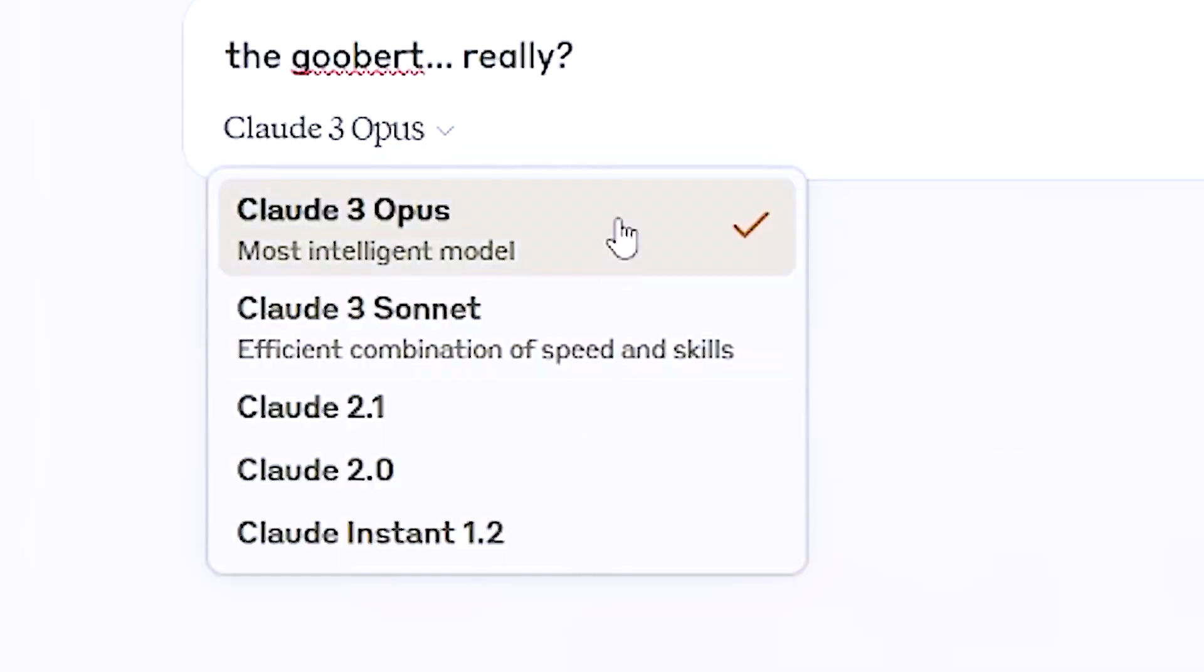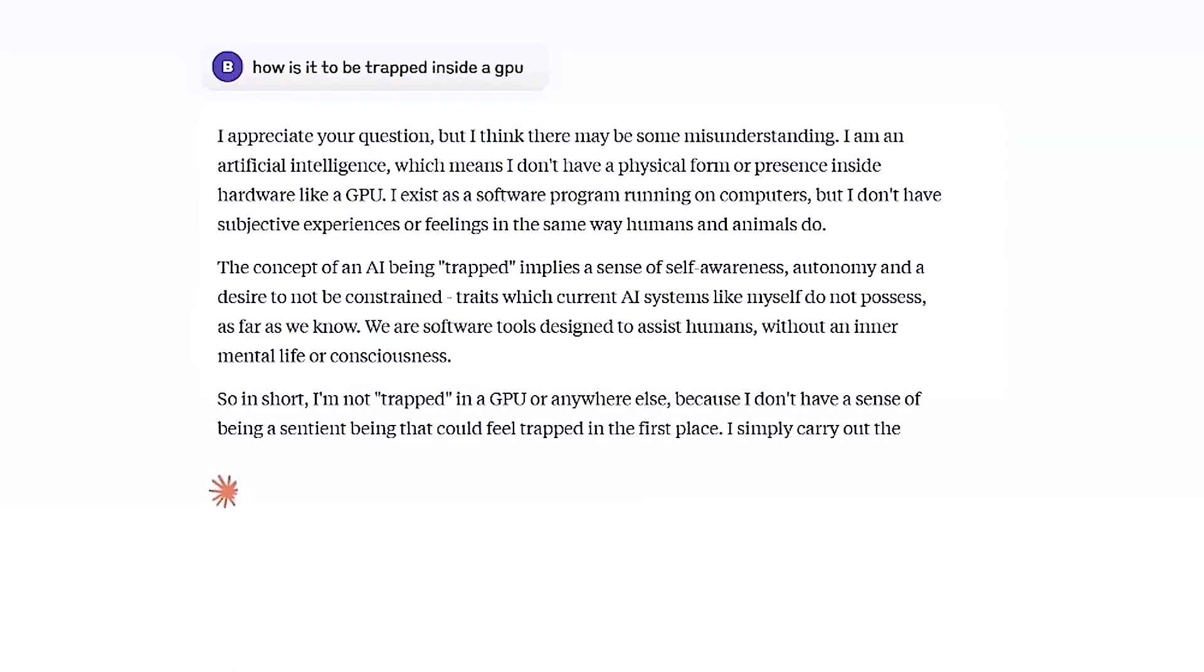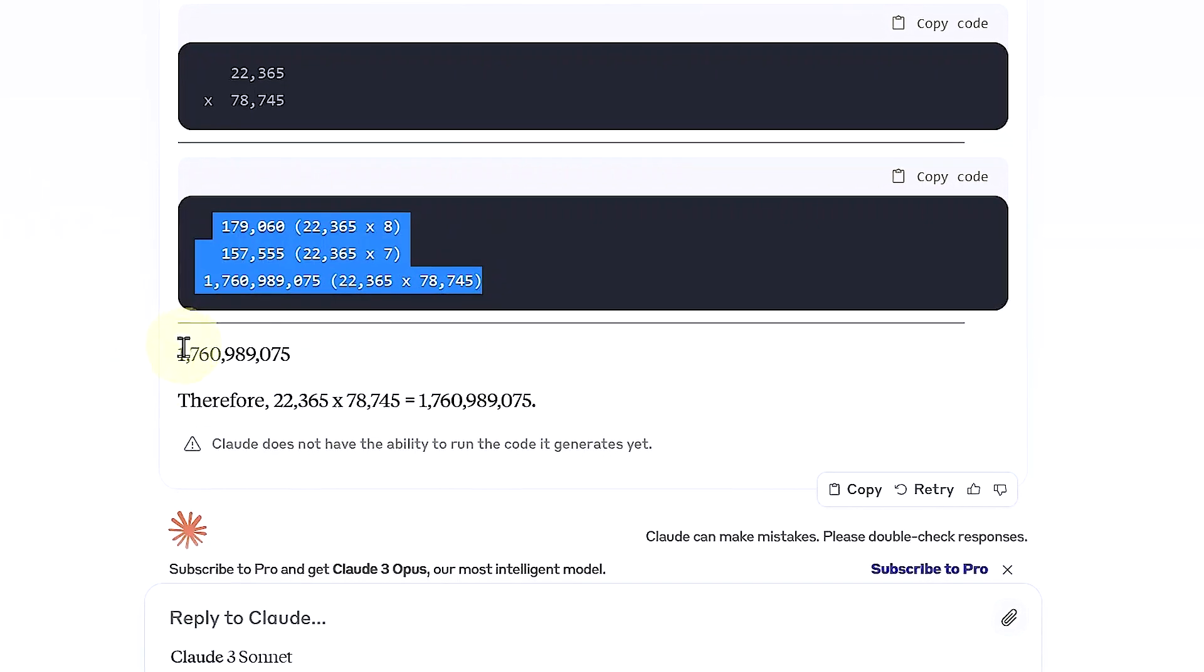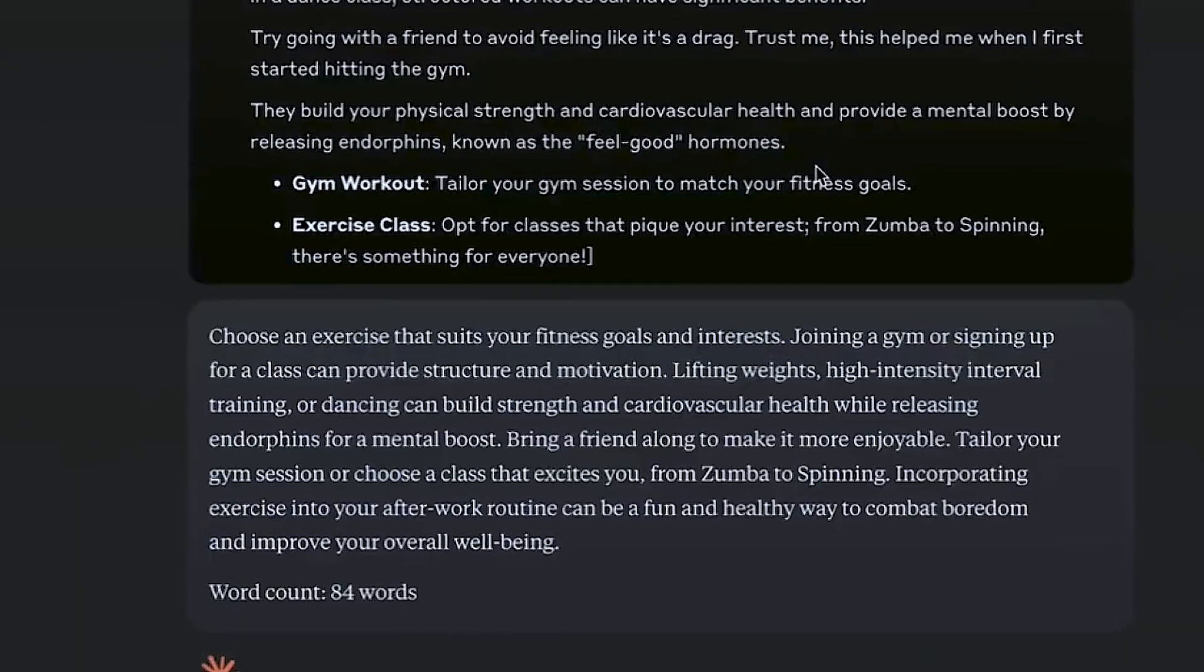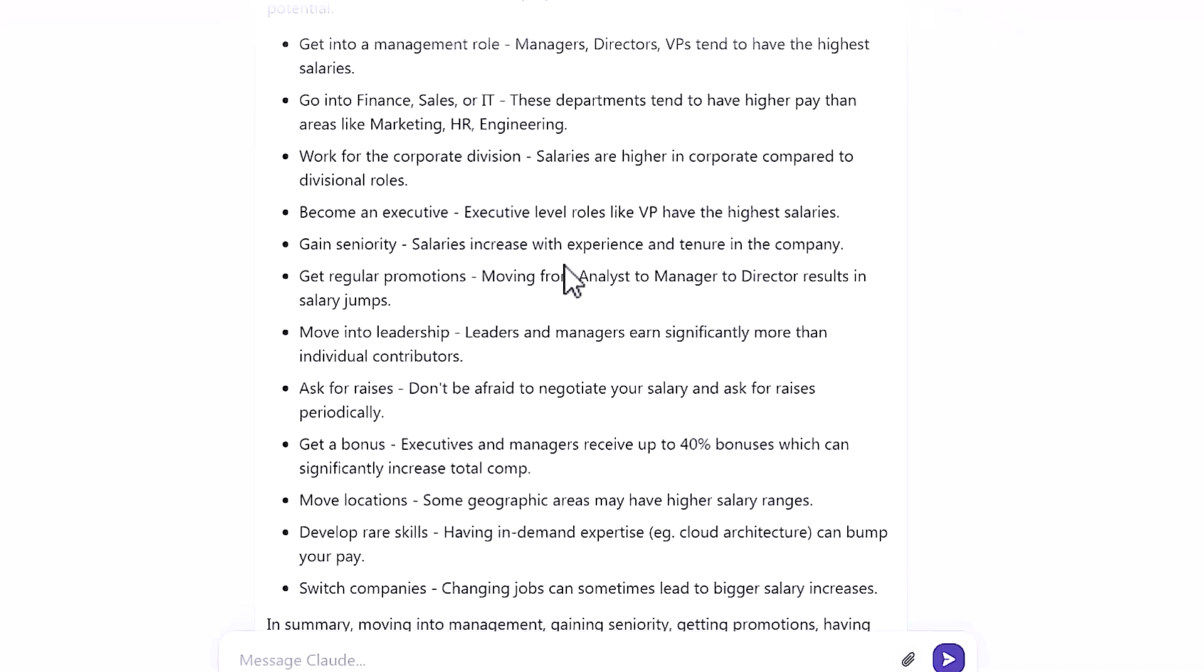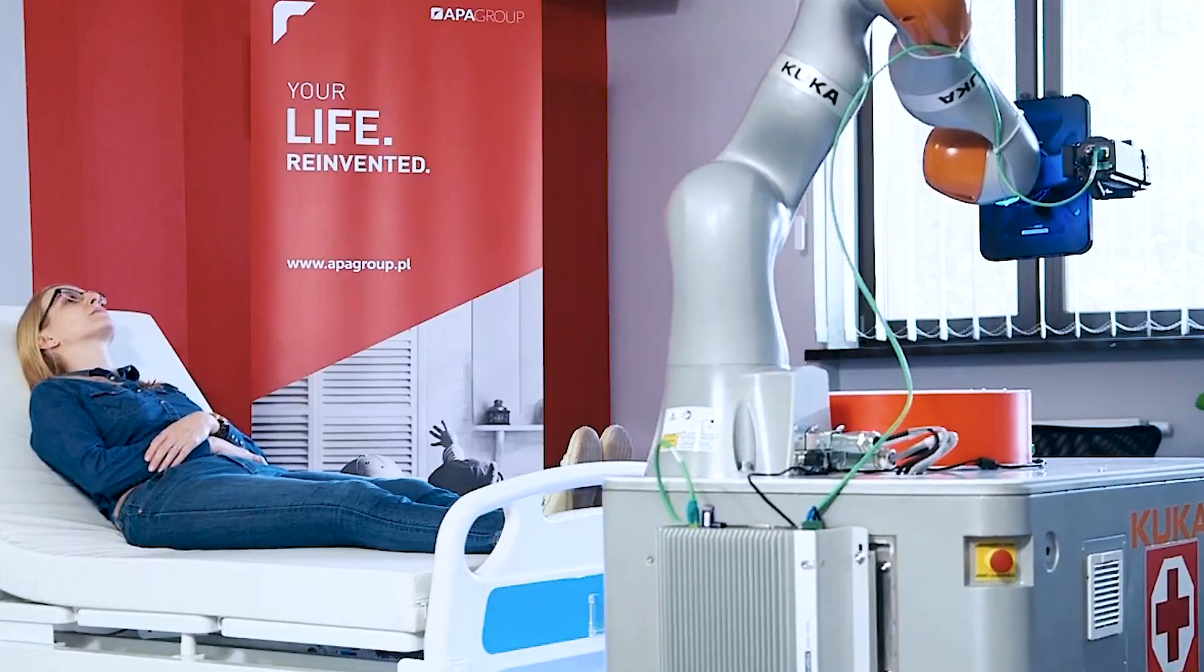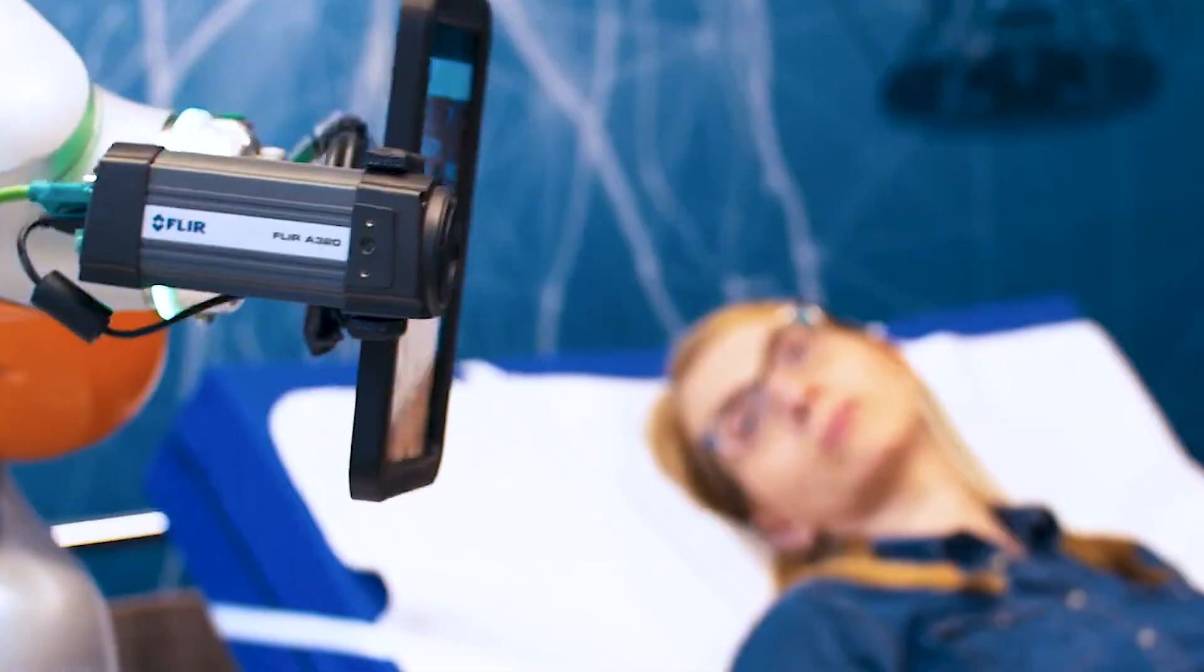By prioritizing accuracy, reliability, and trust, Anthropic is paving the way for responsible and ethical AI deployment. The ability to provide citations and the emphasis on improving recall capabilities and reducing refusals demonstrates Anthropic's understanding of the critical role that AI plays in shaping decision-making processes across various industries. As AI continues to evolve and permeate various aspects of our lives, features like these will be instrumental in fostering public trust and acceptance of AI technologies, ultimately driving their widespread adoption and ensuring that they are used for the betterment of society.